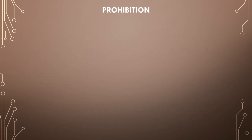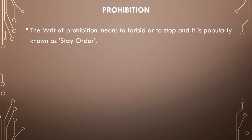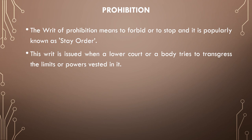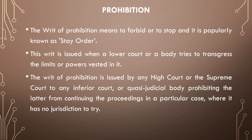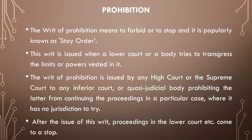The next is the writ of prohibition, which means to forbid or to stop, and is popularly known as a stay order. The writ is issued when a lower court or body tries to transgress the limits or powers vested in it. The writ of prohibition is issued by any High Court or the Supreme Court to any inferior court or quasi-judicial body, prohibiting it from continuing the proceeding in a particular case where it has no jurisdiction to try. After the issue of this writ, proceedings in the lower court come to a stop.